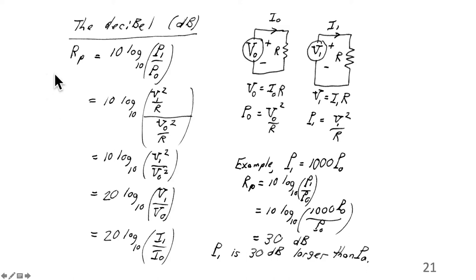The decibel, dB. It's defined to be a ratio of powers. RP is 10 log base 10 of P1 over P0. I have two circuits shown here. They each have a resistor R. In one circuit, there's a voltage V0 applied. In the other circuit, there's V1 applied. By Ohm's law, V0 is I0R in this circuit, and V1 is I1R in this circuit.